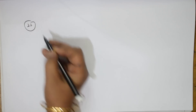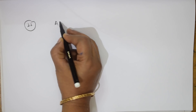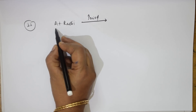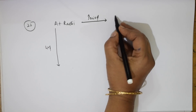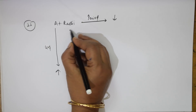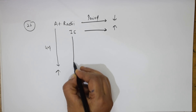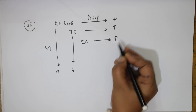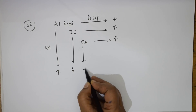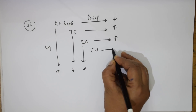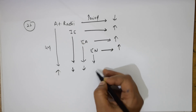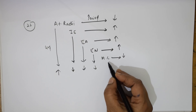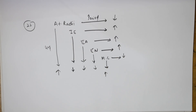The 22nd important concept covers periodic trends. Atomic radii: decreases left to right in a period, increases going down a group. Ionization enthalpy: increases in a period, decreases in a group. Electron affinity: increases left to right in a period, decreases down a group. Electronegativity: increases in a period, decreases in a group. Metallic character: decreases left to right in a period, increases from top to bottom in a group.